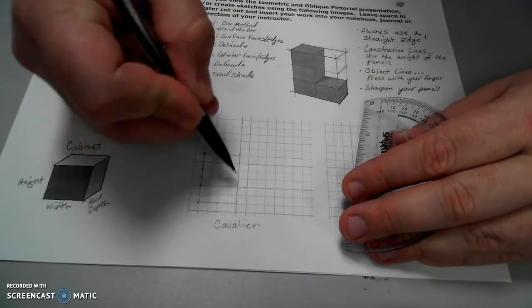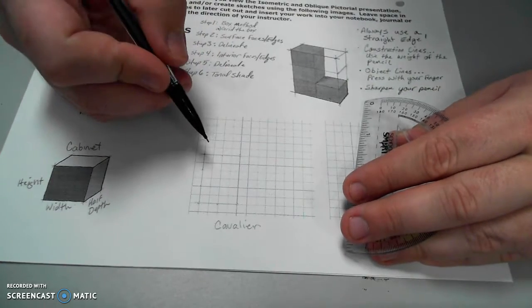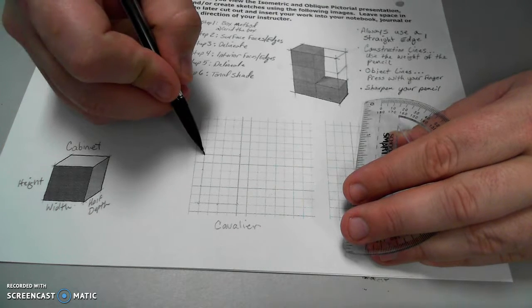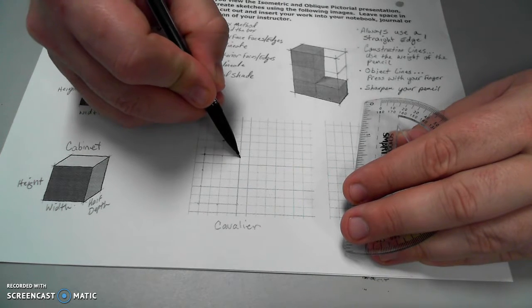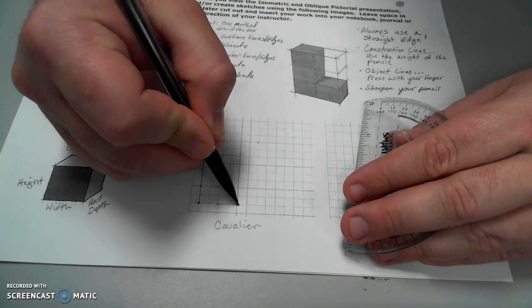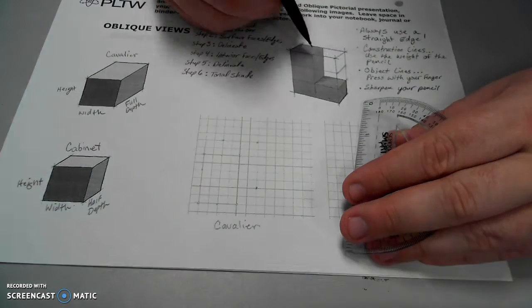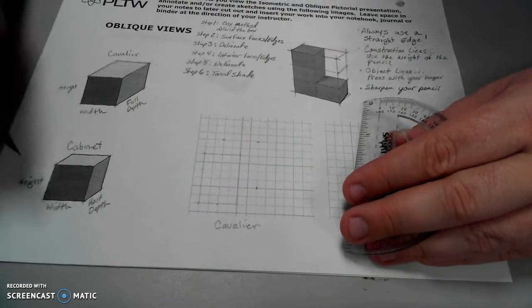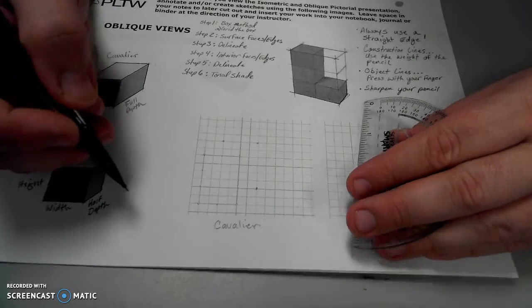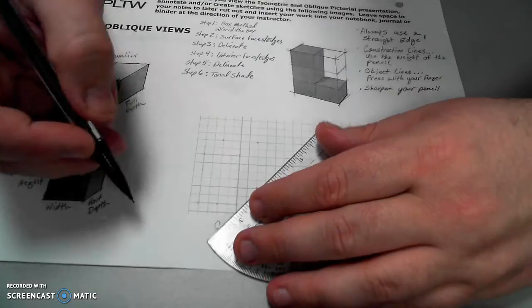That gives me the front face of the box. Now, from each of these three points, I'll go back two units as well. One, two, three, four, five, six. That should be one, two, three. Connect those together.